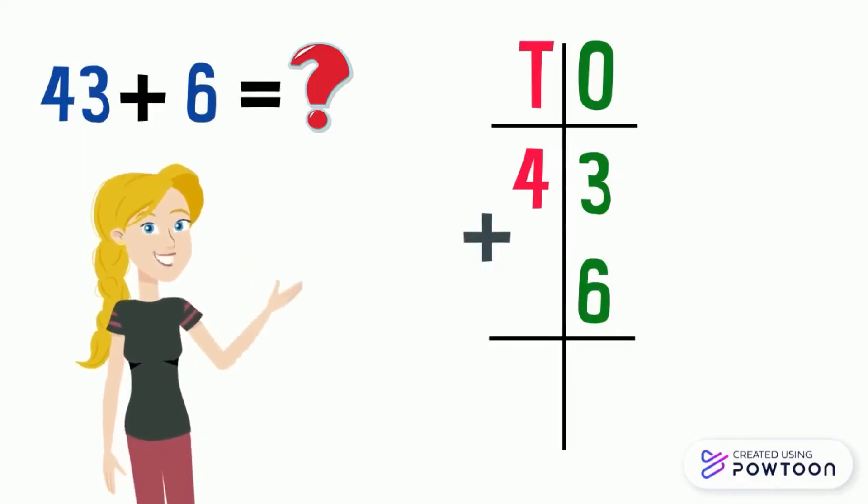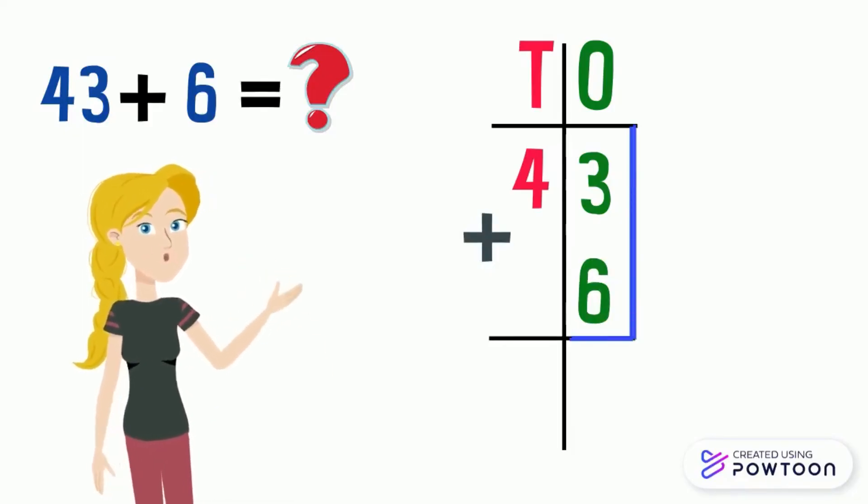We always start to add the numbers in the ones place, which are here 3 and 6. So, 6 plus 3 equals 9.